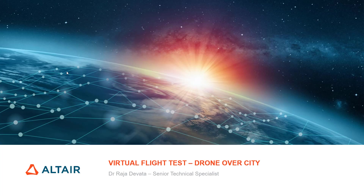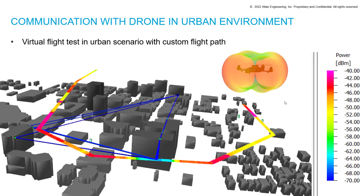In this tutorial I would like to present about virtual flight test. A drone will be flying over the city and will have a sector antenna placed on top of one of the buildings, which needs to establish connection with the drone. We will see how to set up this application in WinProp, using the Frankfurt city database, with the drone flying at specific heights in an urban scenario.